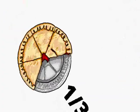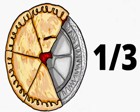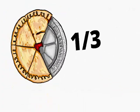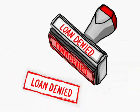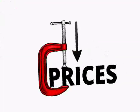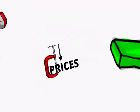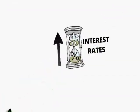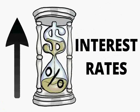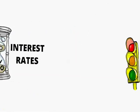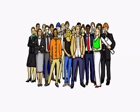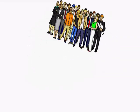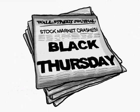The government then removes about a third of the money in the economy, reducing the availability of loans and lowering prices. This rollercoaster monetary policy, increasing interest rates and lack of loans, signal wise investors to get out of the market. The masses of people follow on Black Thursday, crashing the stock market.